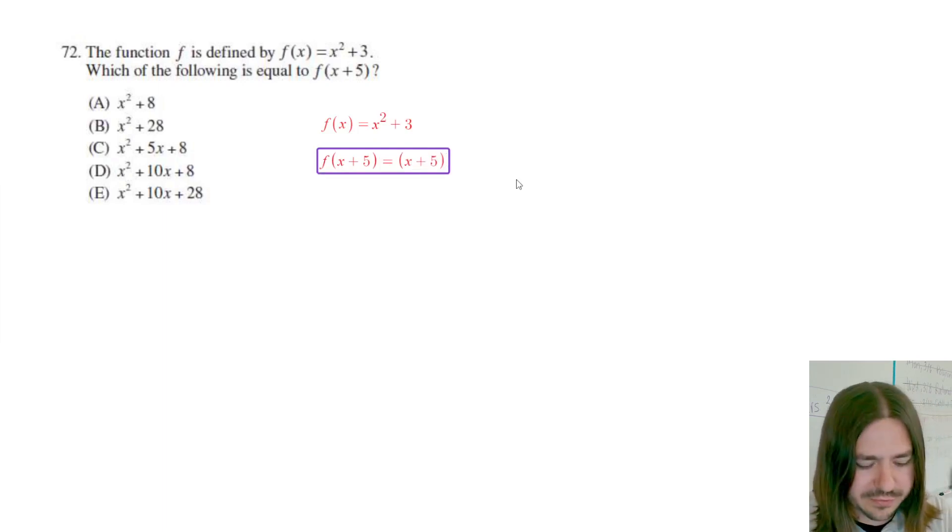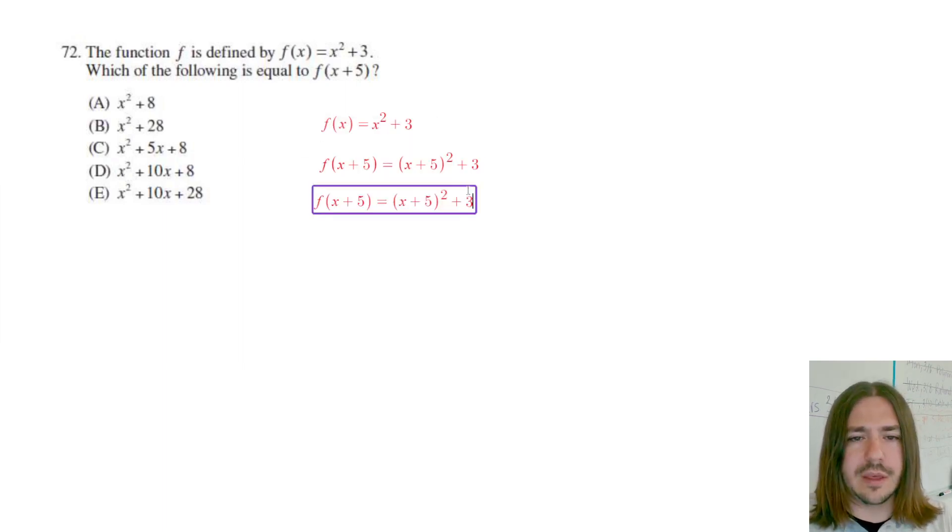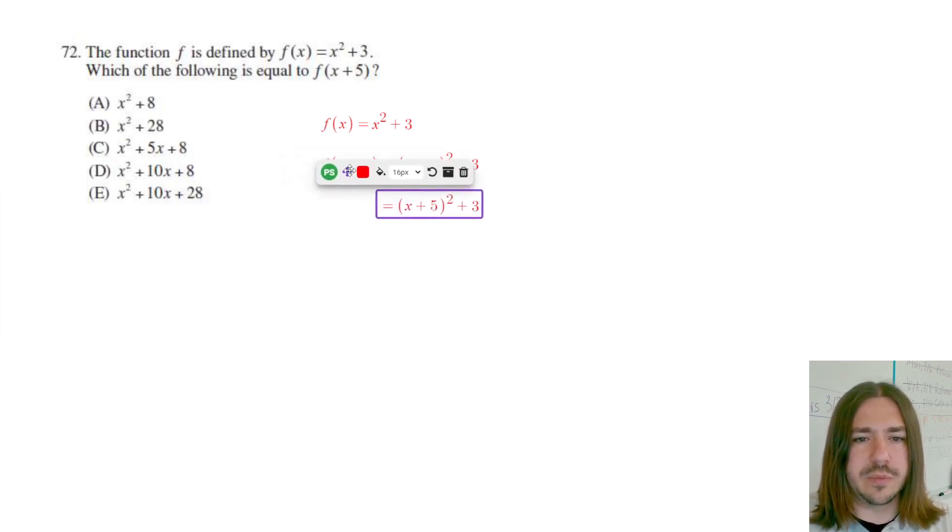(x + 5)² + 3, and then just simplify. I'm going to delete this so it's not cluttered up, scoot this over a little bit. The first thing we need to do is multiply this x + 5 times itself. Whenever you're squaring something,